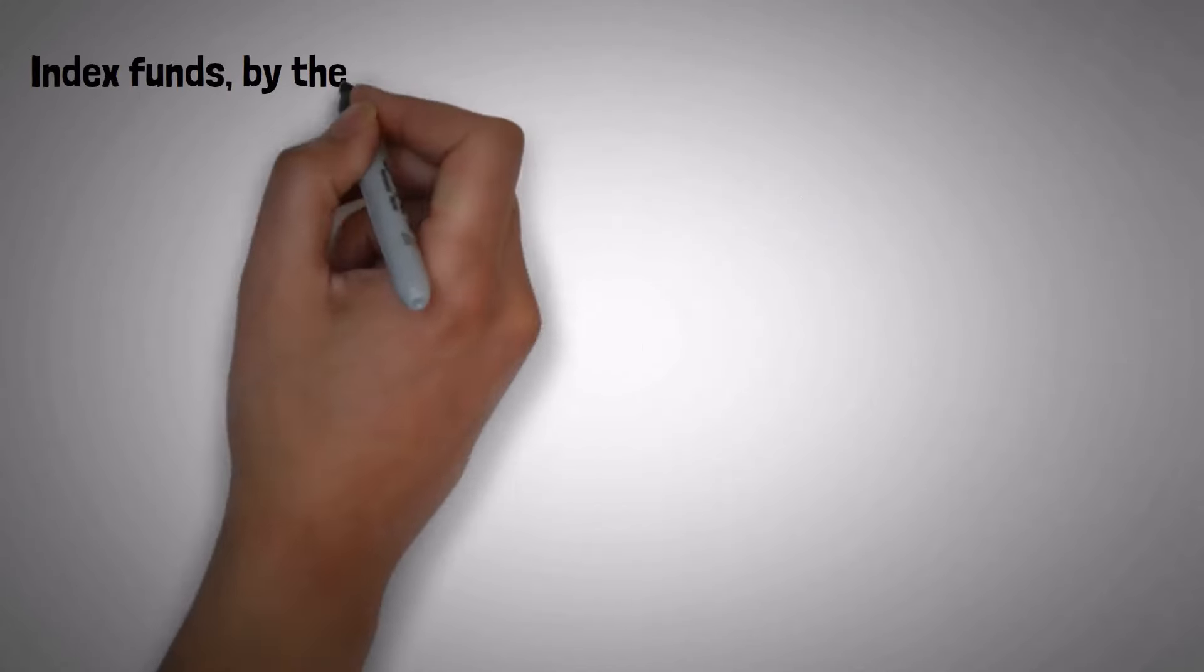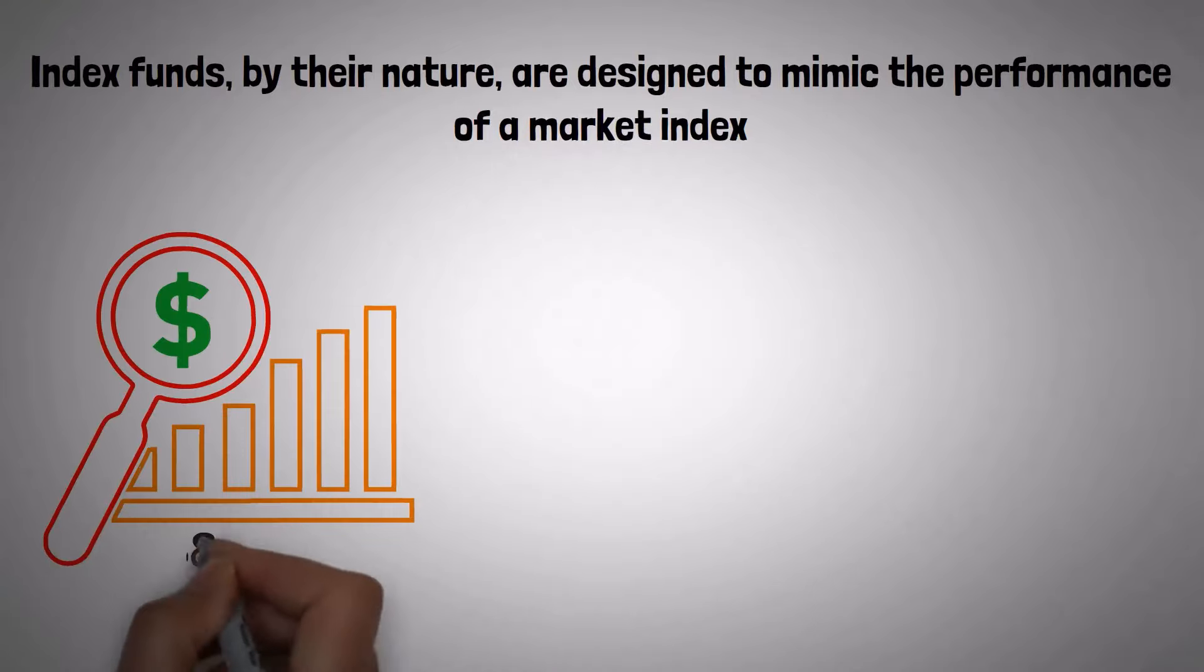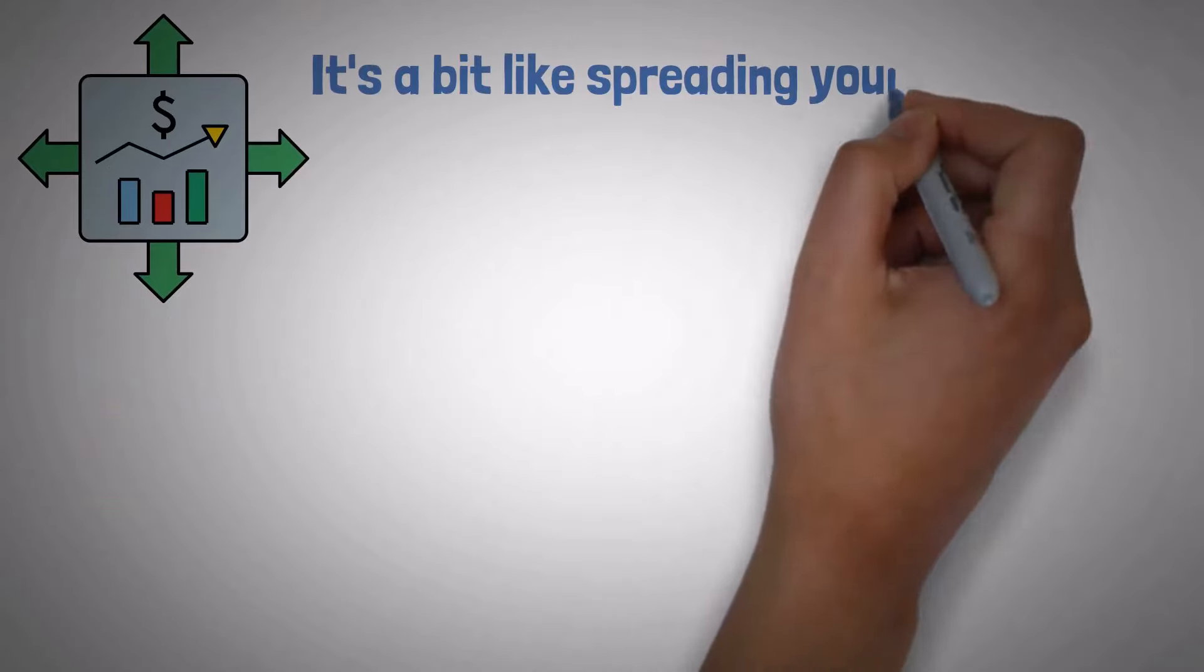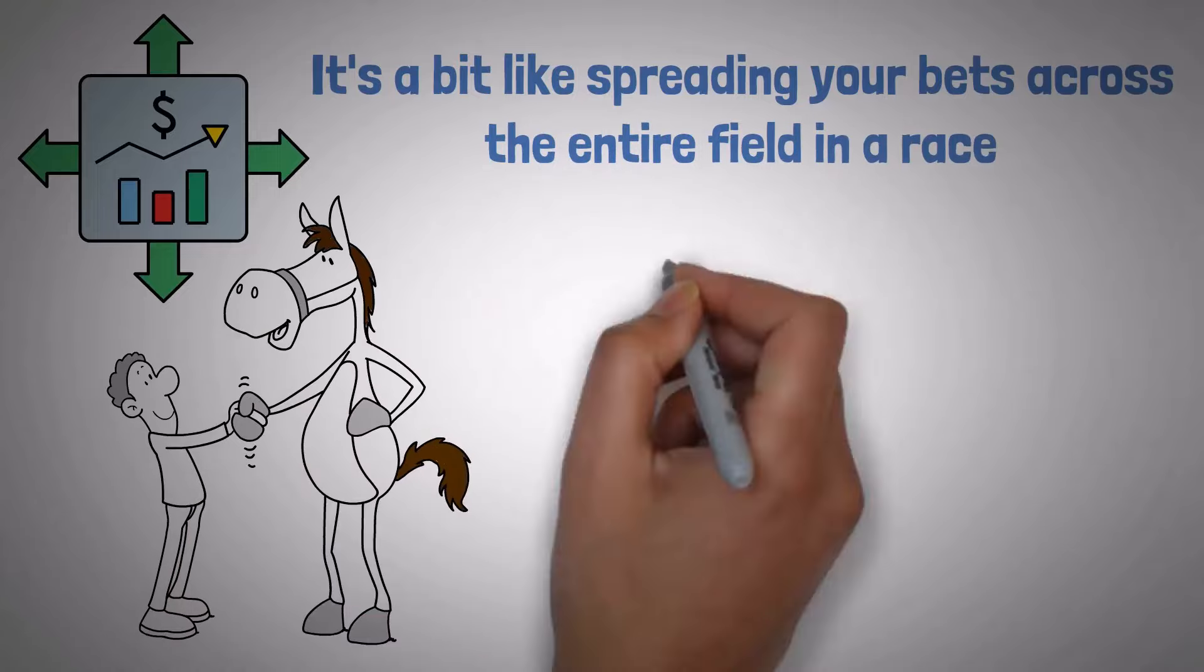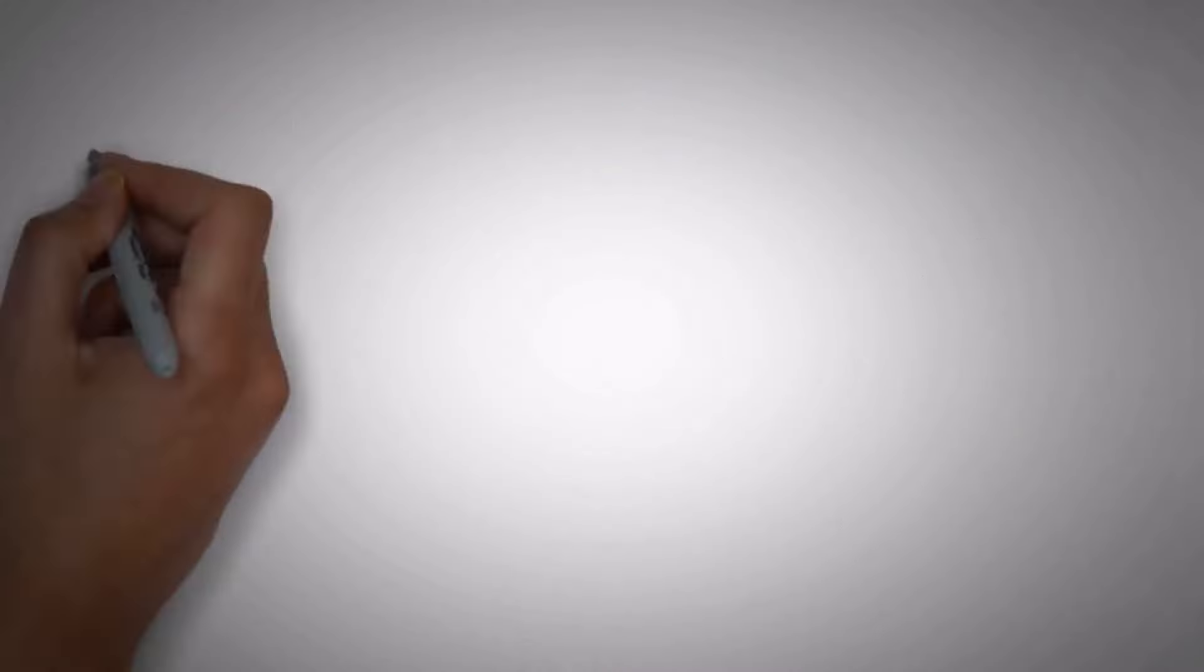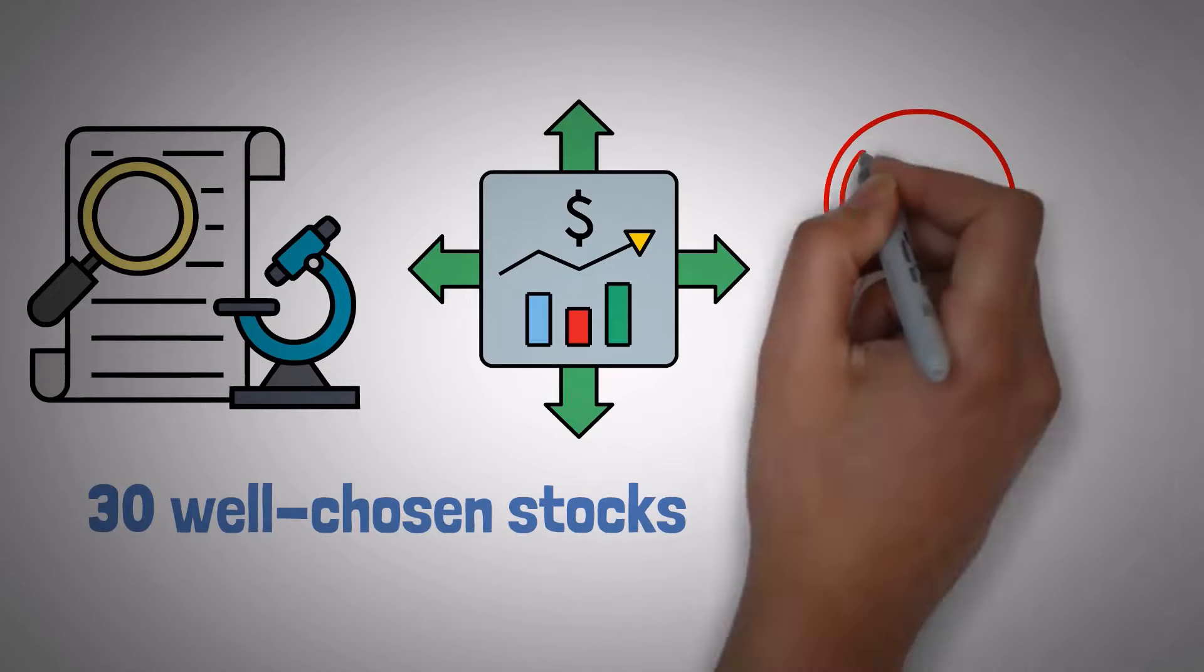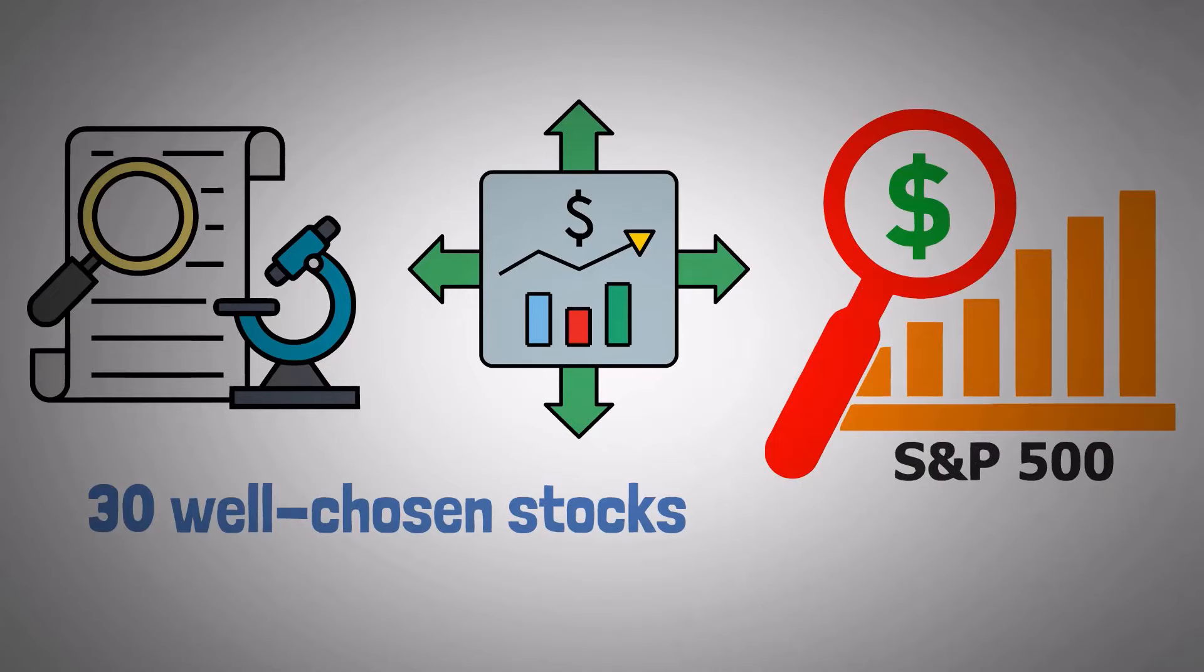Index funds, by their nature, are designed to mimic the performance of a market index, like the S&P 500, which includes a broad swath of companies. While this offers diversification, it's a bit like spreading your bets across the entire field in a race, rather than picking the horses you truly believe have the best chance to win. And here's a thought to chew on. Research shows that diversification benefits can be achieved with as few as 30 well-chosen stocks, not necessarily the 500 you'd be tied into in an S&P 500 index fund.